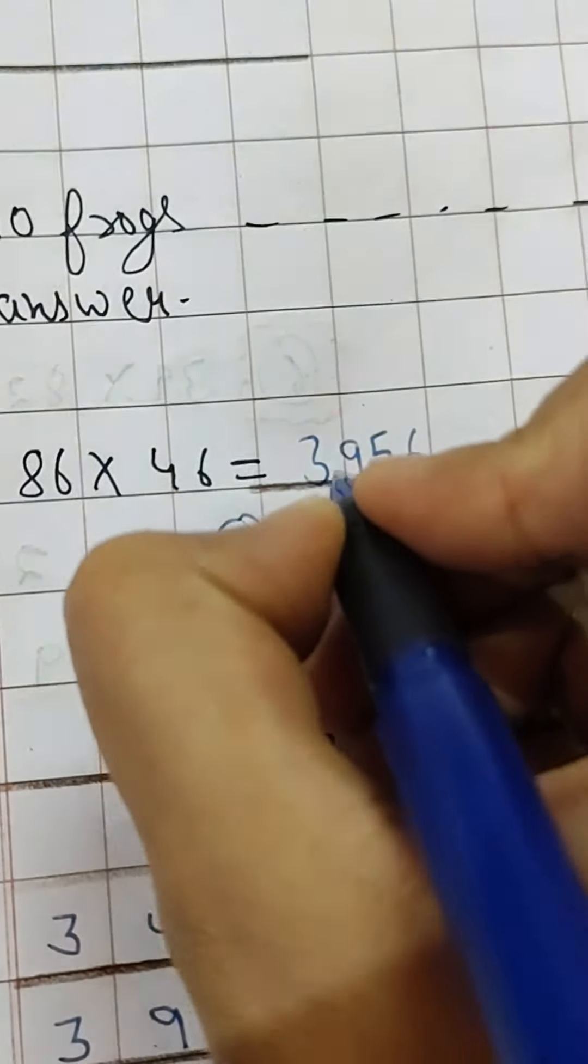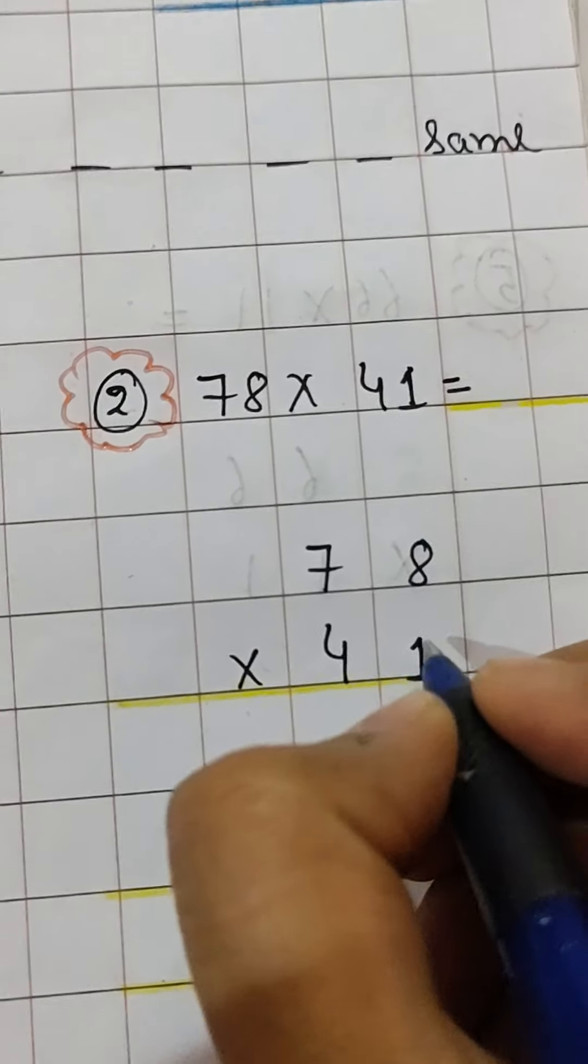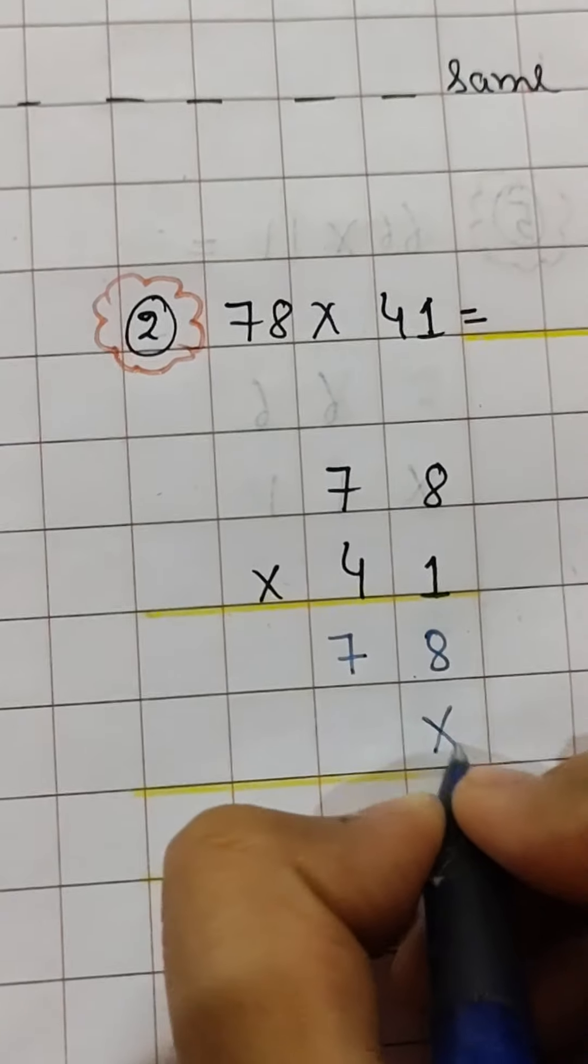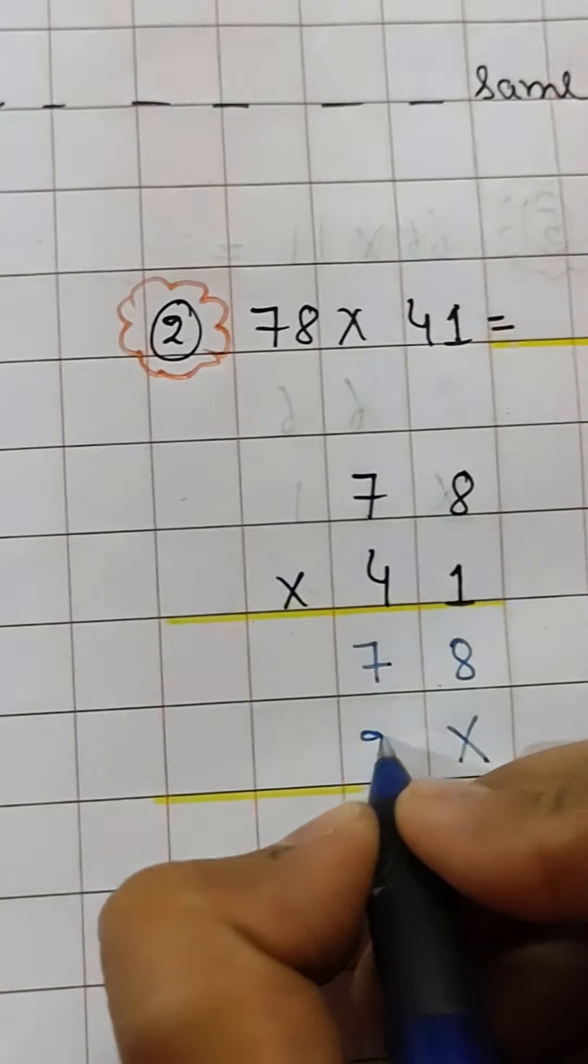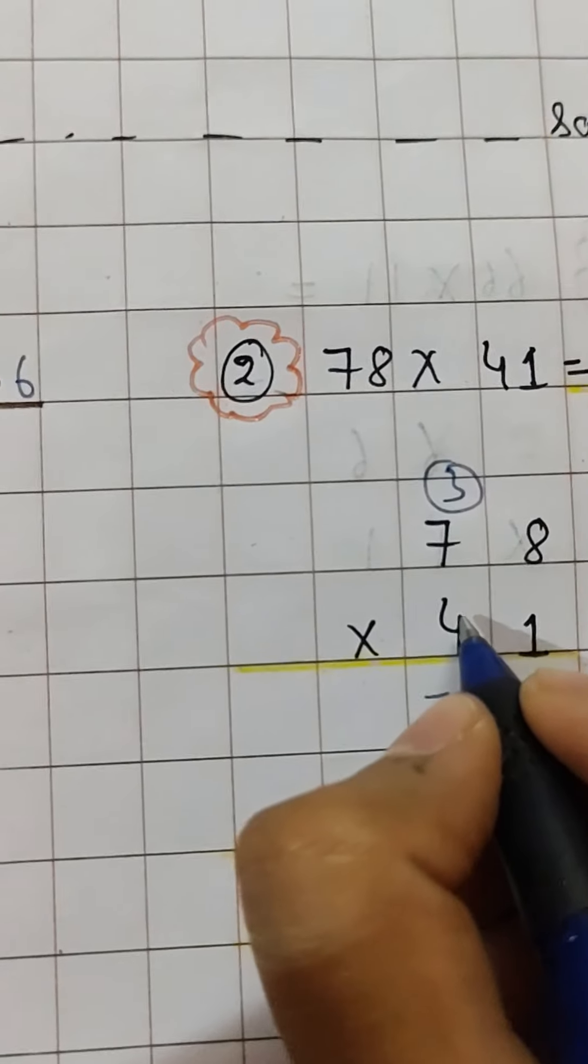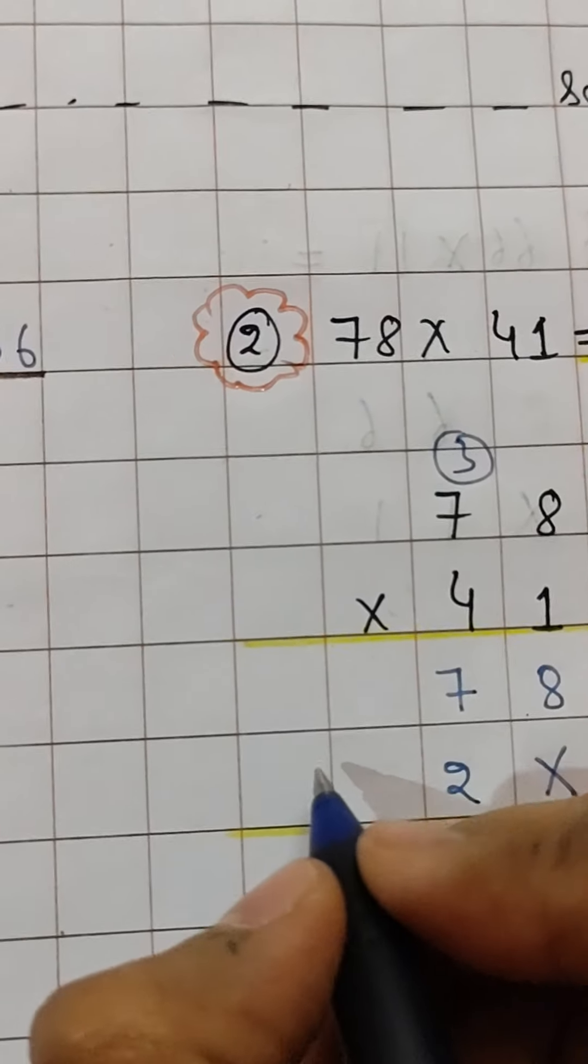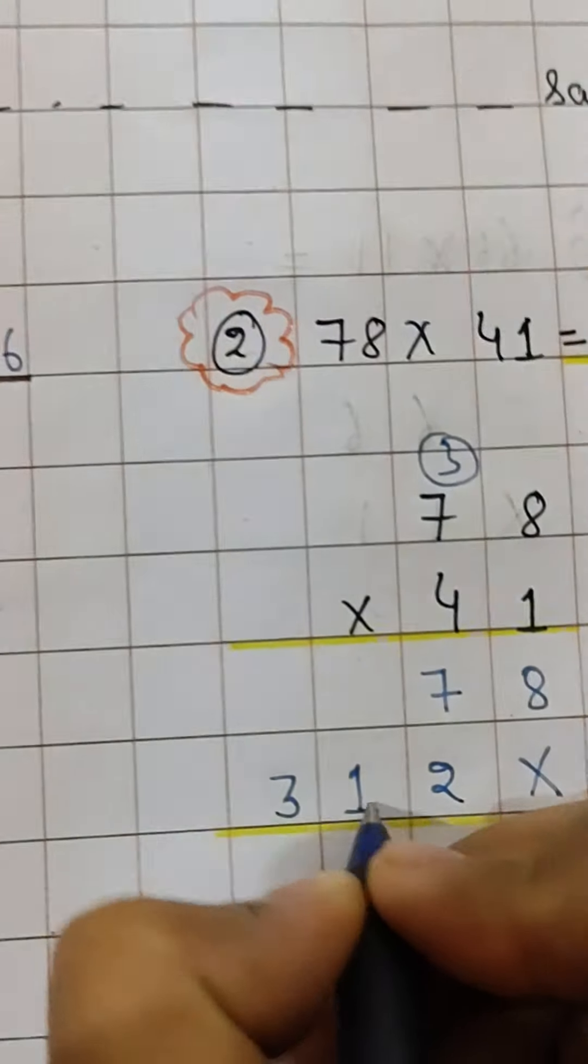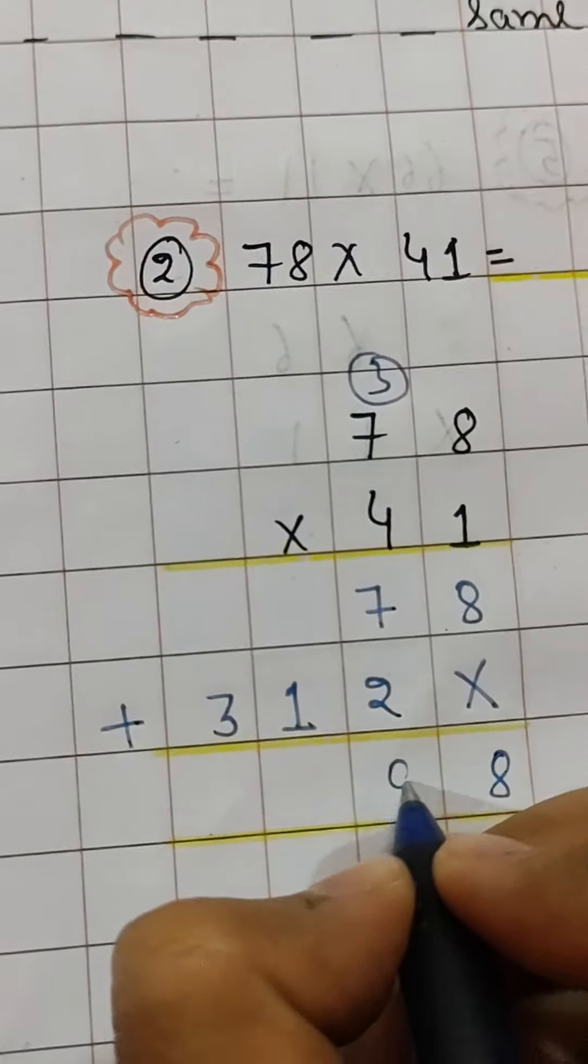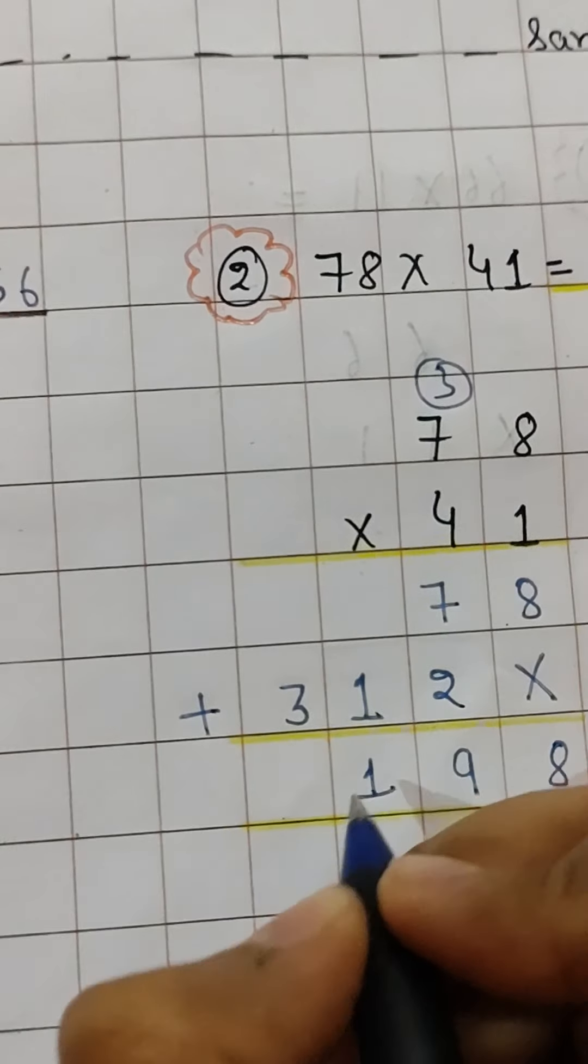Then here 178 multiply by 4: 8 times 4 is 32, 2 here, 3 here, 4 times 7 is 28, 28 plus 3 is 31. So 31 here and plus sign. So 8, then 7, then 7 plus 2 is 9, then 1. So the answer is 3198.